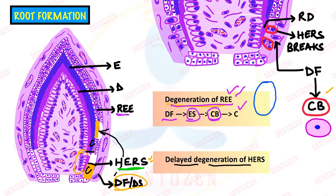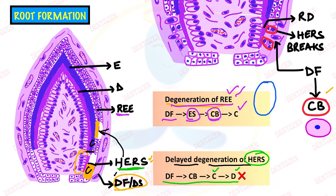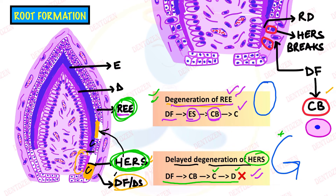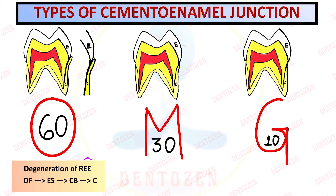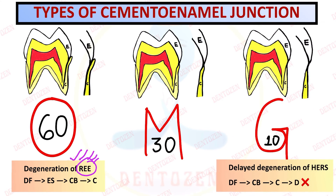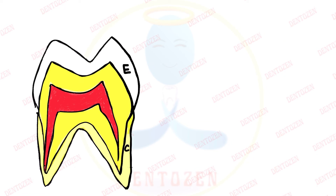Delayed degeneration of Hertwig's epithelial root sheath leads to no formation of cementum over dentine, resulting in a gap between cementum and enamel with dentine exposed. To summarize: overlap forms when reduced enamel epithelium degenerates early; normal (edge-to-edge) junction forms when everything proceeds normally; and gap forms when there is delayed degeneration of HERS.